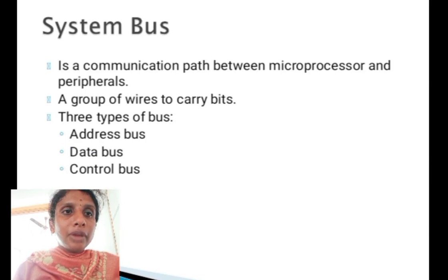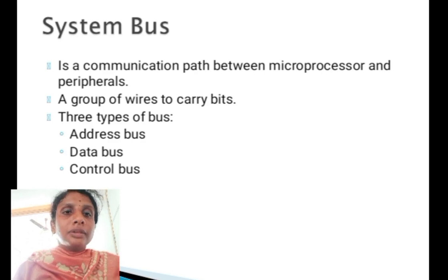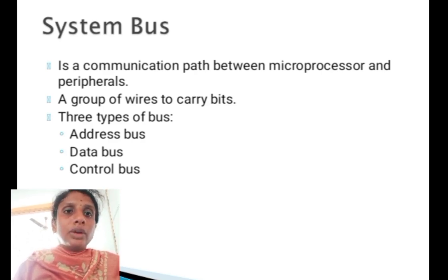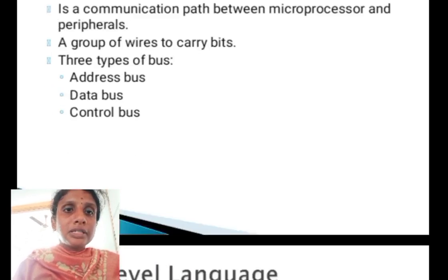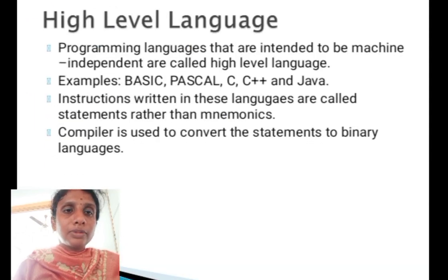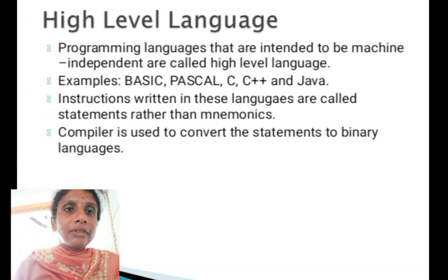The system bus is the communication path between the microprocessor and peripherals — a group of wires that carry bits. There are three types of buses: the address bus, data bus, and control bus.